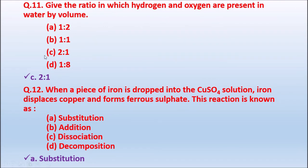Question 11: Give the ratio in which hydrogen and oxygen are present in water by volume. Option A: 1:2. Option B: 1:1. Option C: 2:1. Option D: 1:8. In water (H₂O), hydrogen and oxygen are present in the ratio 2:1. The correct answer is 2 is to 1.